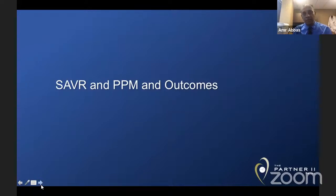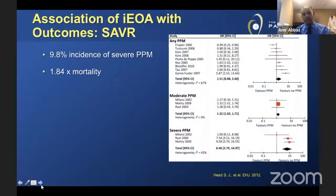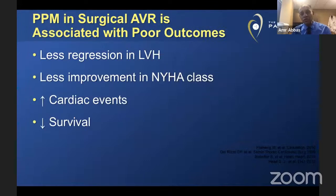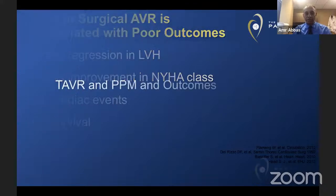Regarding PPM and outcomes in the surgical literature: looking at the association of indexed effective orifice area with outcomes in SAVR, the incidence of severe PPM in a large analysis was around 10%, and it increased mortality approximately two times. In a study of almost 60,000 patients greater than 65 years old, severe PPM was 11% and was associated with a 30% increase in mortality, consistent across age, ejection fraction, and BMI. In the surgical literature, PPM is associated with less LVH regression, less improvement in New York Heart Class, higher cardiac events, and decreased survival.